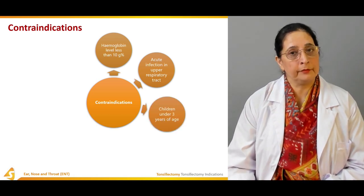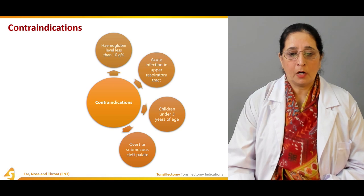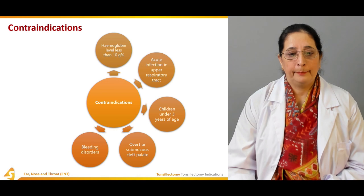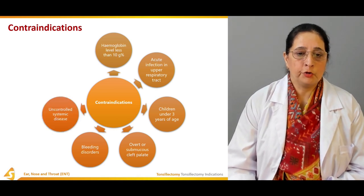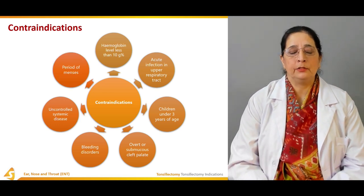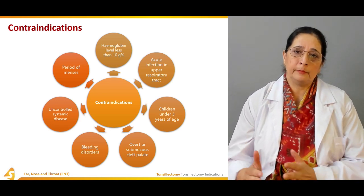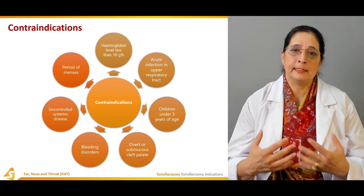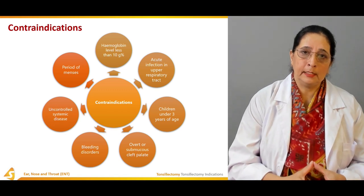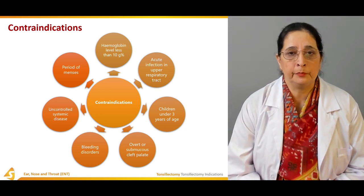Children under three years of age must wait until they are at least three years old. Overt or submucous cleft palate is a contraindication. Bleeding disorders are a contraindication, as patients with bleeding disorders have a tendency to bleed excessively and difficulty stopping bleeding. Uncontrolled systemic disease and the period of menses are also contraindications — tonsillectomy is not performed during the menstrual cycle.